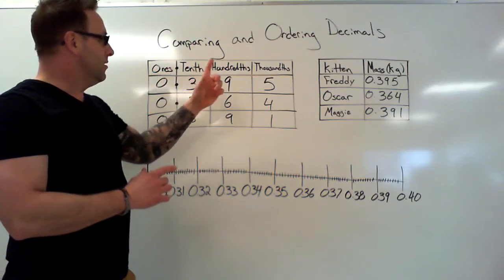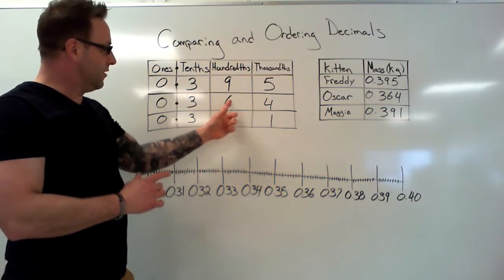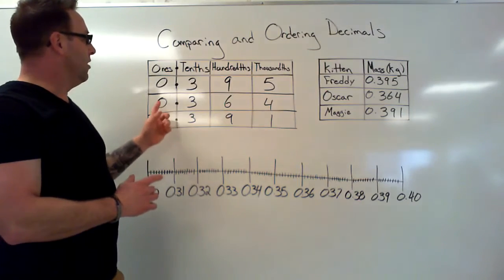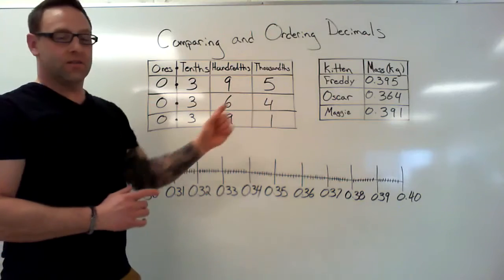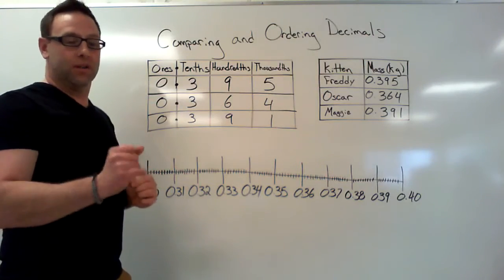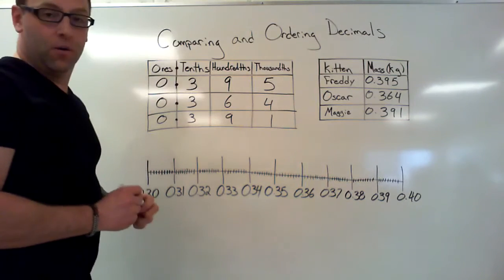All right, so same, same, same, same, different. Okay, so we know that this one, our weight for Oscar, is going to be the smallest of our decimals.